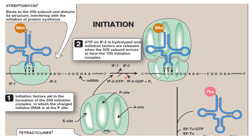In the initiation phase in prokaryotes, initiation factors 1 and 3 along with the smaller ribosomal subunit and the initiator tRNA form the initiation complex. Initiation factor 2 with GTP brings the initiator tRNA to the P-site of the ribosome. When the larger ribosomal subunit attaches, the initiation factors are released and this complex enters the elongation phase.